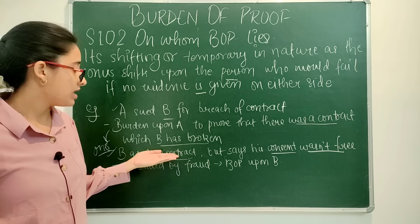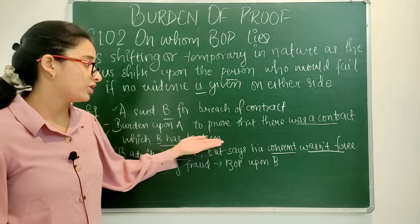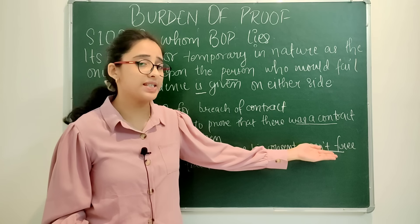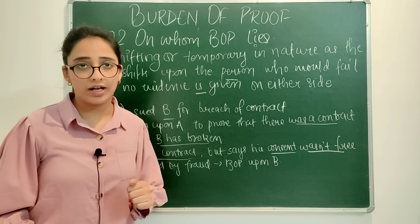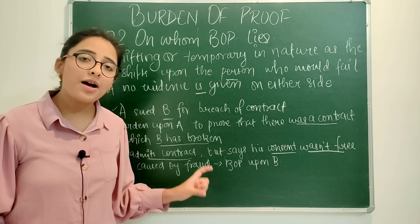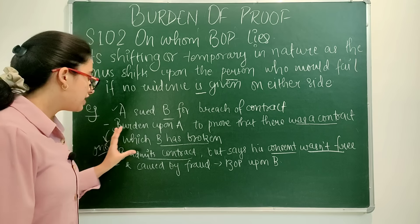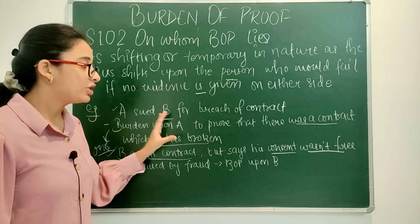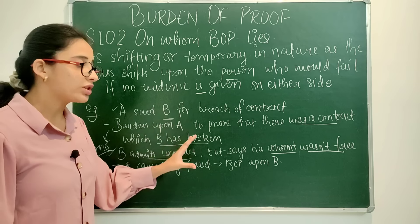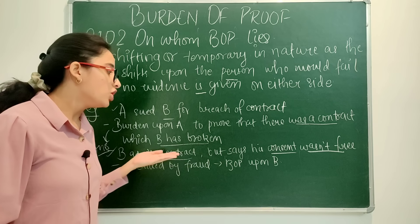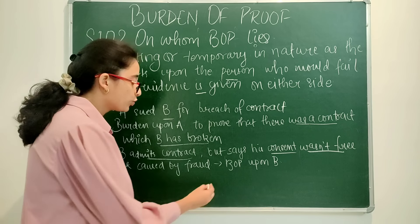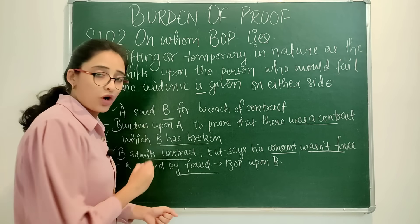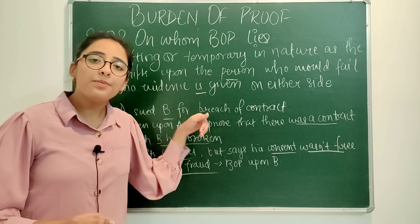B in his turn said yes, there was a contract, but his consent was not free and he was defrauded. So B admitted both things. But if B gives no evidence, he will lose the case. Therefore the burden is upon B now to prove fraud.